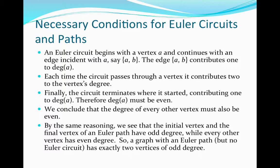By the same reasoning, the initial vertex and the final vertex of an Euler path must have odd degree while all other vertices must have even degree. An Euler path starts and ends at different vertices — we'll leave from the very first one and not come back to it, so it will have odd degree. The last vertex will also have odd degree because we simply arrive at it one final time with that final edge.